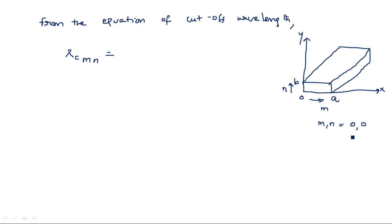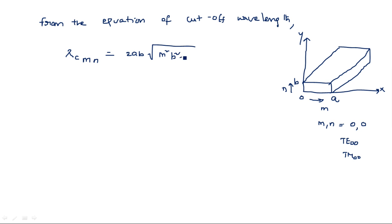For example, if M=0 and N=0, that mode is known as TE00 or TM00. Similarly we have modes TE11, TE12, TE21, TE22, TE31, and so on — N number of modes. The cutoff wavelength formula is: lambda c (MN) = 2AB / sqrt(M²B² + N²A²).